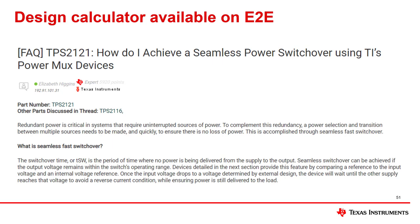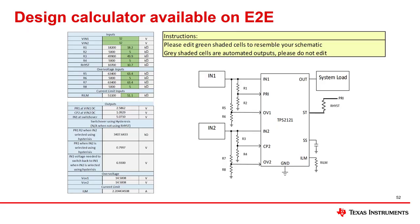In this video we have covered how to select your switchover point, how to add hysteresis if needed, and how to implement over-voltage protection. In addition to this collateral, we provide a design calculator available on E2E using the link below this video. The Excel calculator allows the user to input their external resistor configurations and determine their switchover point from N1 to N2, their switchover point from N2 to N1 when using hysteresis, their over-voltage calculation, and current limit.